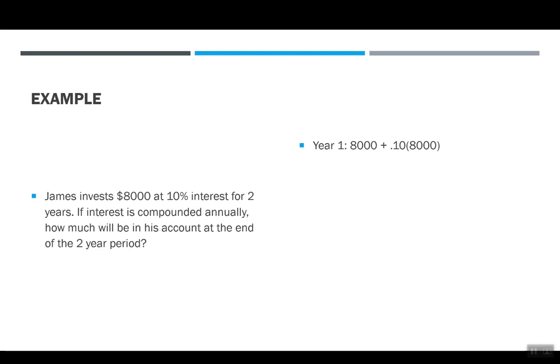So in year one, we have the $8,000 that James started with plus 10% of the $8,000. This gives us $8,000 plus $800. So at the end of year one, there's a balance of $8,800.